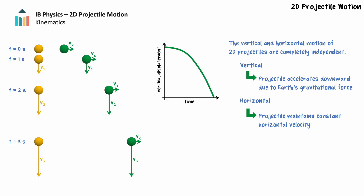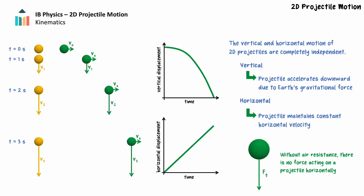We will only quantitatively consider projectile motion in which there is no air resistance present. The only force acting on the projectile is the force of gravity, so there is no net force in the horizontal direction, and the projectile does not accelerate in the horizontal direction.